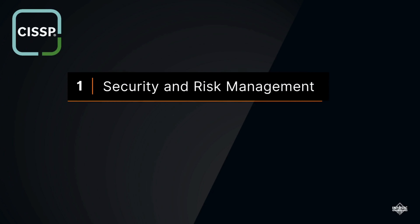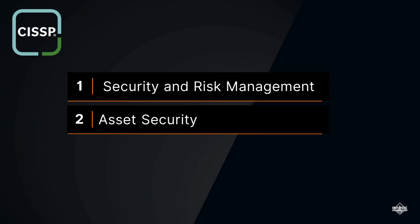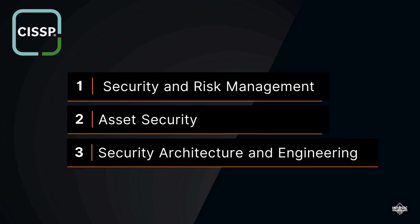Before we jump into the questions, here's a quick overview of what each domain covers. Domain 1, Security and Risk Management, focuses on foundational concepts of security, risk management, and governance, including topics like security policies, risk analysis, and compliance. Domain 2, Asset Security, covers the protection of information and assets throughout their life cycle, including data classification, ownership, and privacy considerations. Domain 3, Security Architecture and Engineering, dives into the principles of security design and architecture, covering secure system design, cryptography, and security models. Now let's tackle some practice questions.